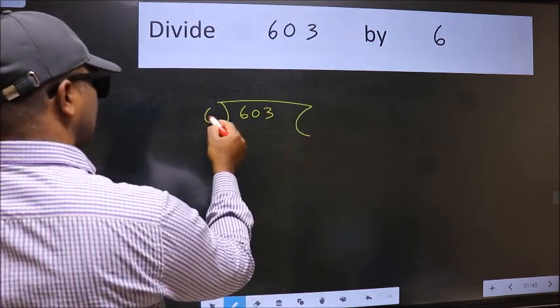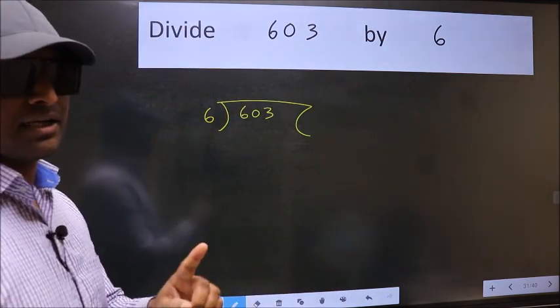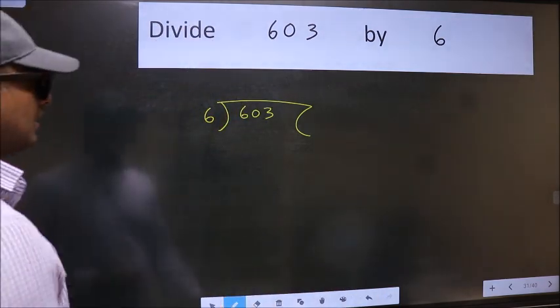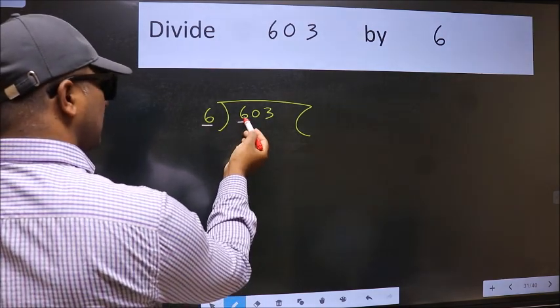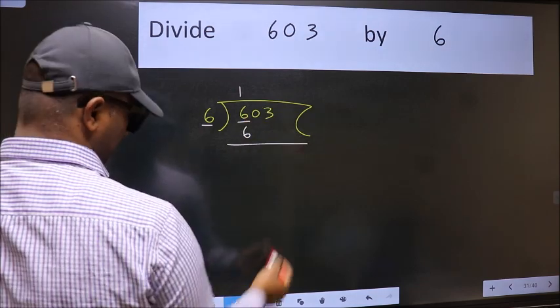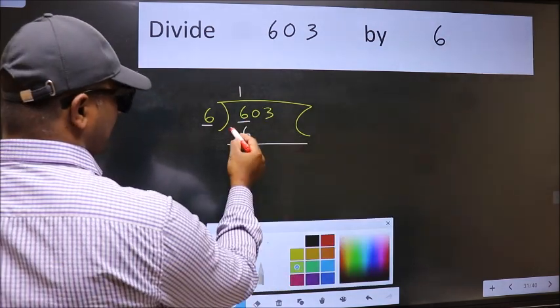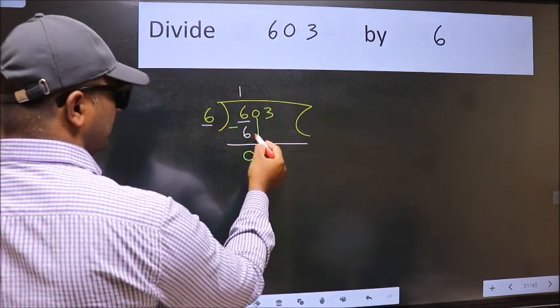Here, this is your step one. Next, here we have 6 and here 6. When do we get 6 in the 6 table? 6 ones is 6. Now we should subtract, we get zero. After this, bring down the beside number.